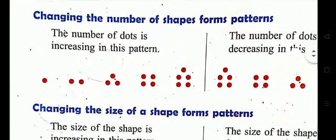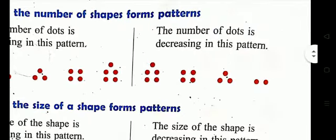Second, changing the number of shapes forms patterns. You can see dots: one dot, then two, then three, then four, then five — the number of dots is increasing. And here five, then four, then three, then two — the number of dots is decreasing. So increasing or decreasing the number of shapes also forms a pattern.